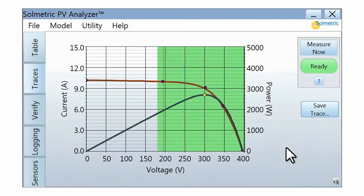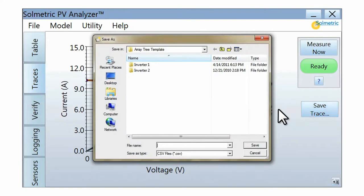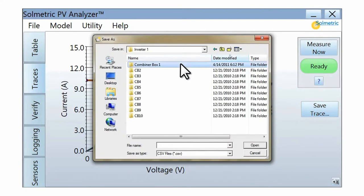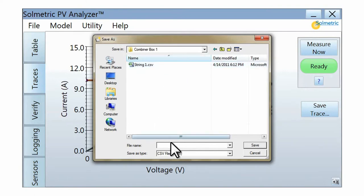Each trace can be stored on the PC in the form of a CSV file which can later be opened in a spreadsheet program such as Microsoft Excel. Data files include a record of all the measurements made by the PV Analyzer, as well as the predictions of the performance model.